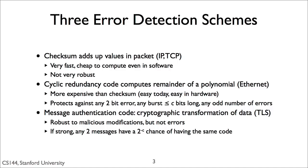The first of the three commonly used error detection algorithms is a checksum. You just add up all the data in the packet. It's what TCP and IP use. Checksums are nice because they are very fast and cheap to compute, even in software. Back when the internet started and everything was in software, this was valuable.